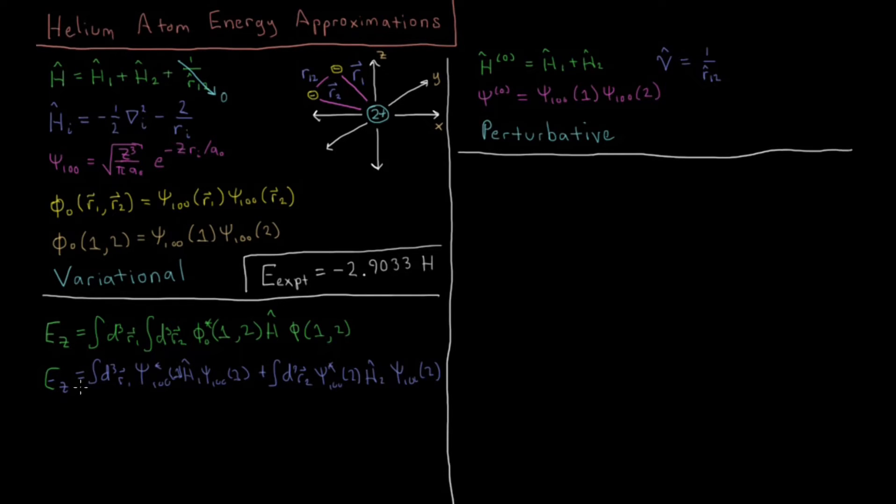Okay, so if we get what the energy is as a function of this charge z, what we get is that it is z squared minus 27 eighths z. Once you slug through all the algebra and calculus inside of those integrals there, which I'm skipping ahead. And this is in units of Hartree, which are atomic units, which we discussed on the previous page. A hydrogen atom in the 1s ground state has an energy of minus 0.5 Hartrees, so that's the kind of scale we're dealing with.